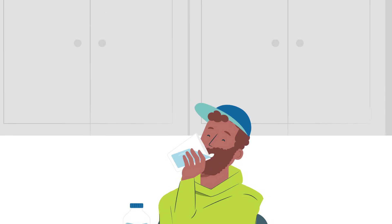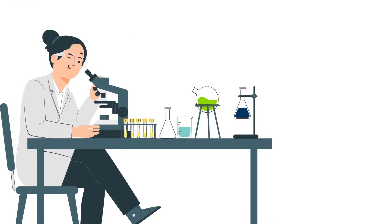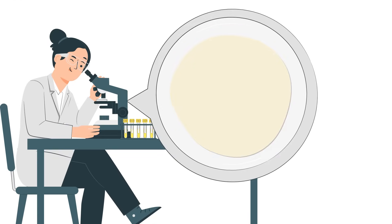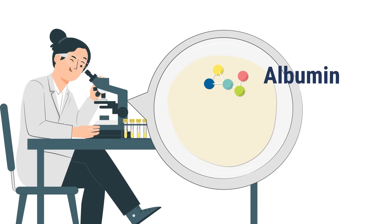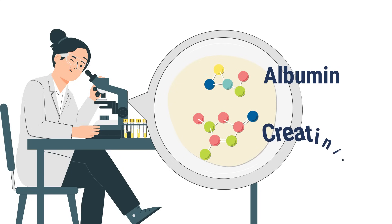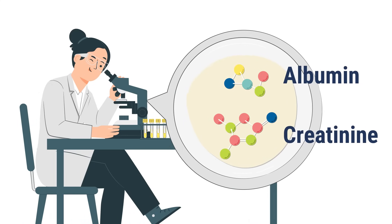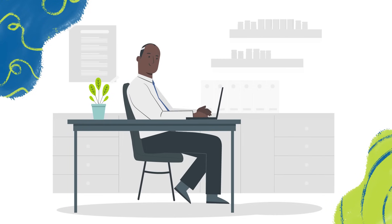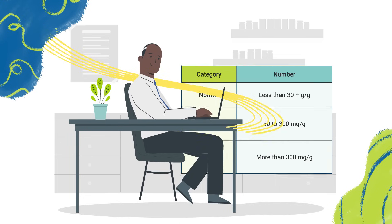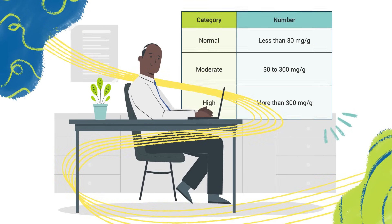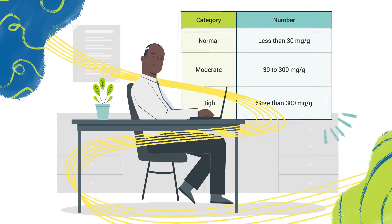Your urine sample is then sent to a lab, where they look at the amount of albumin, the main protein in your blood, and creatinine, a waste product from your blood filtered by your kidneys in your urine. Your doctor will compare these levels to figure out your UACR.